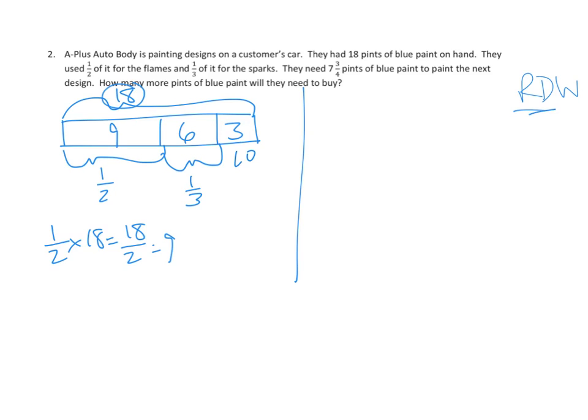So now that we know they did this painting of the flames, they did this painting of the sparks, they had three pints left over, they need seven and three fourth pints of blue paint to paint the next design. Well this is going to be easier than I thought, right? So they needed seven and three fourths. They had three left over from the previous one, and that is going to equal what they need to get. Seven wholes minus three is four and three fourths, right? Seven minus three is four, and then three fourths minus nothing is three fourths. So it looks like they need four and three fourths pints of blue paint.